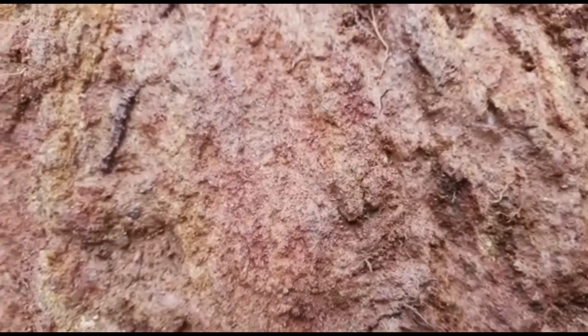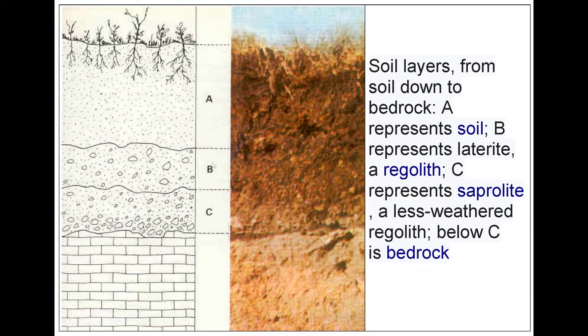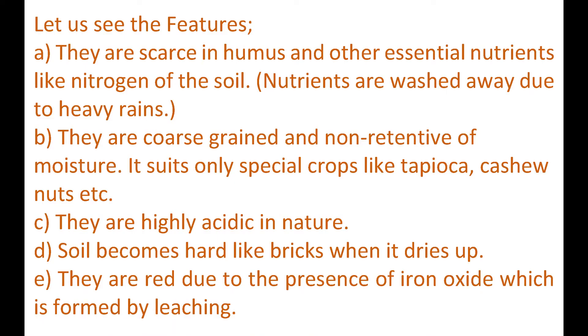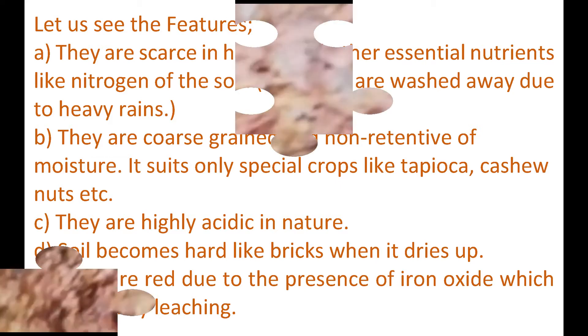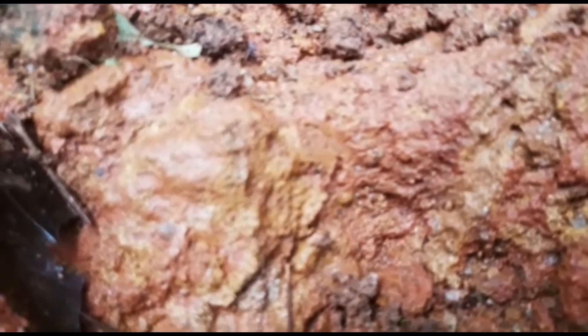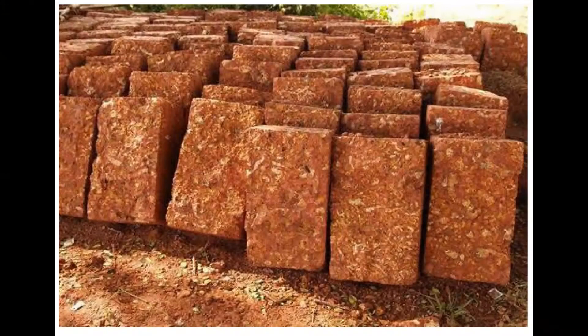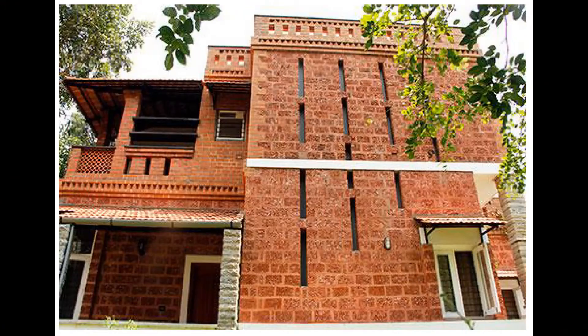All South Indian states are found with laterite soil. Let us see the features: they are scarce in humus and essential nutrients like nitrogen. They are coarse-grained and non-retentive of moisture. They suit only special crops like tapioca and cashew nuts. They are highly acidic in nature and become hard like bricks when dry. The red colour is due to the presence of iron oxide formed by leaching. Laterite stones are used for construction of houses as they are hard enough to support buildings.